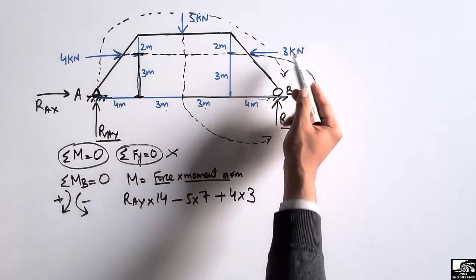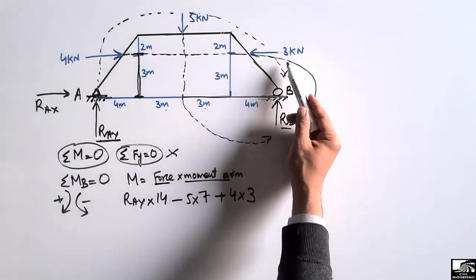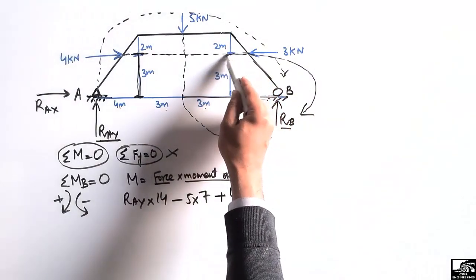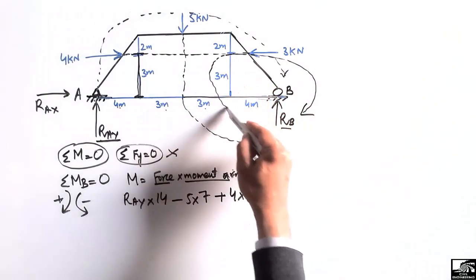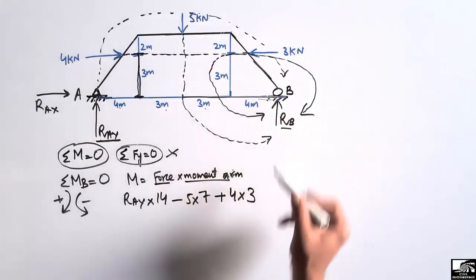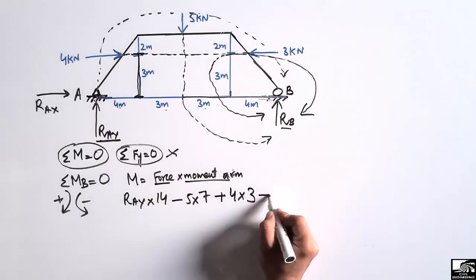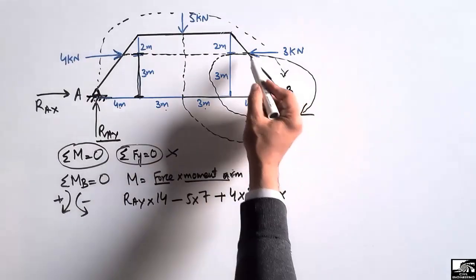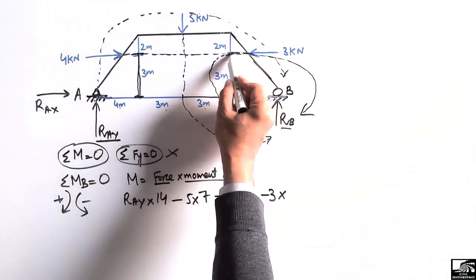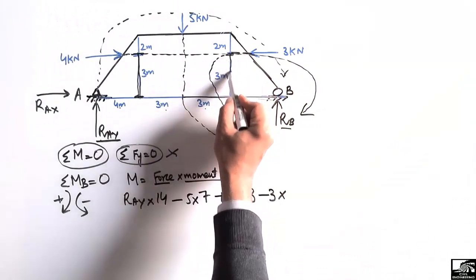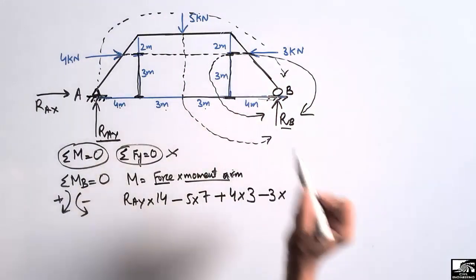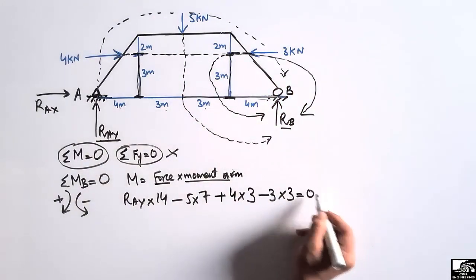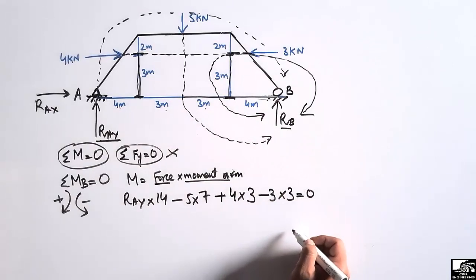The 3 kN horizontal force also creates a moment about point B. This force creates an anti-clockwise moment about point B, so it is taken as negative. The moment arm is the vertical distance from the point of application to point B, which is 3 meters. So the contribution is minus 3 multiplied by 3. The summation of all moments about point B equals zero.